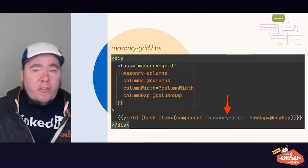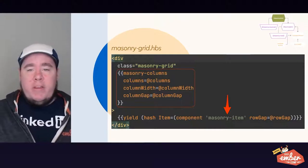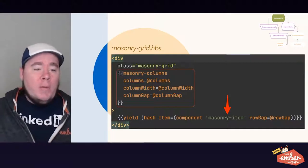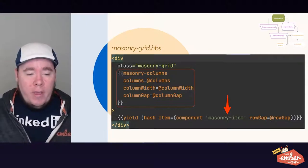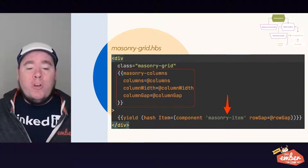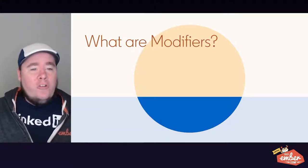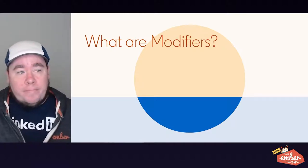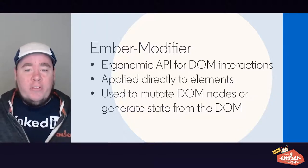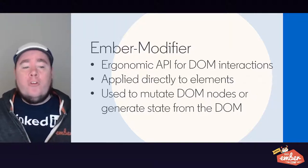Internally, within our masonry-grid template, we have the masonry-columns modifier, which gets passed the number of columns — or the string 'auto' if we want it to auto-adjust as the container resizes — plus the column width and column gap. We then yield out a hash containing our masonry-item component and pass the row-gap argument to it. For this demo, I'm using Ember Modifier, which is an add-on that provides an ergonomic API for DOM interactions in Ember apps. Modifiers can be applied directly to elements in the template and you can use them to mutate DOM nodes or generate state from the DOM.